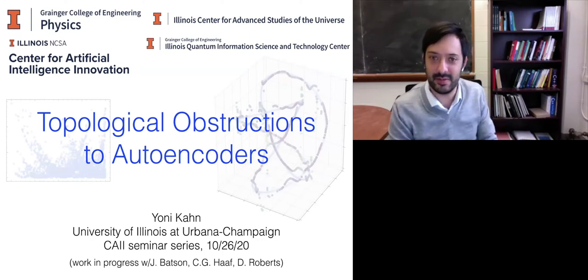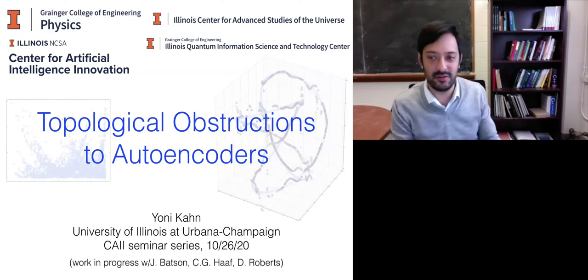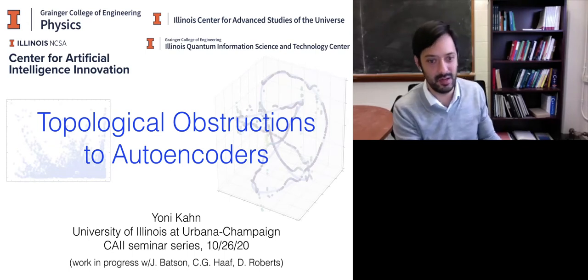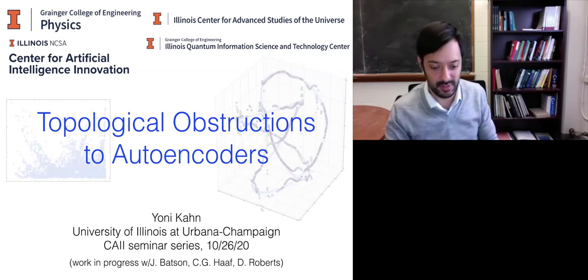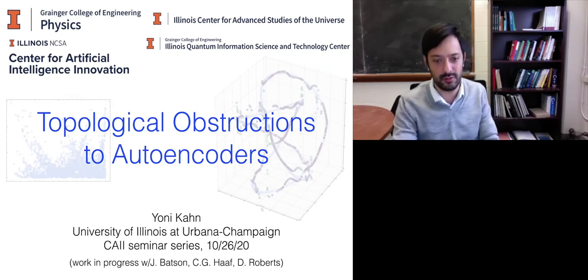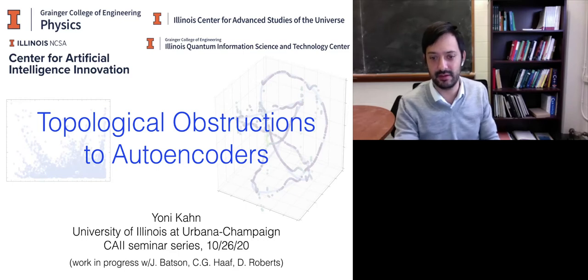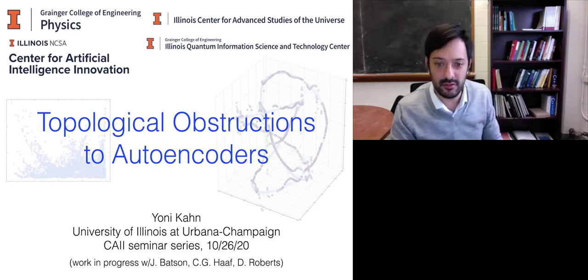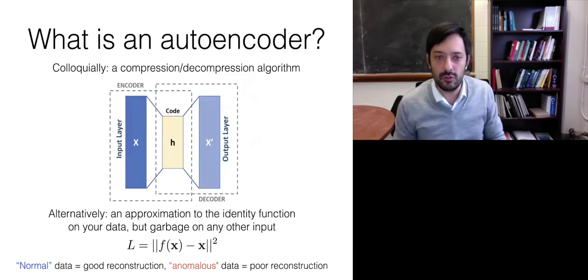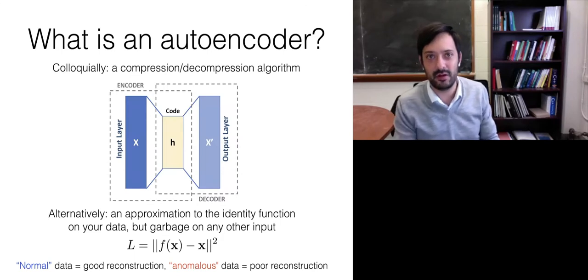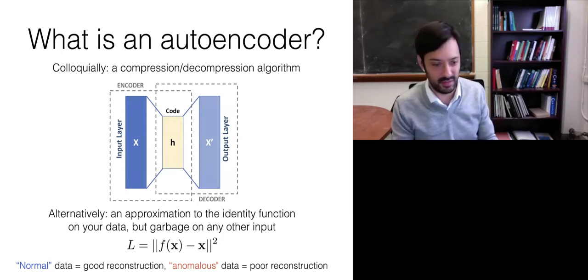This is a little bit outside of my comfort zone. I'm speaking to a new audience and learning a lot of things about AI as I'm working on this. I invite questions or comments throughout the talk — feel free to interrupt. This is work in progress with Joshua Batson, Christine Grace Hoff and Dan Roberts, which will hopefully be on the archive soon. Thank you so much to Aaron for the really nice talk last week, which I think set up everything I'm going to be talking about extremely well.